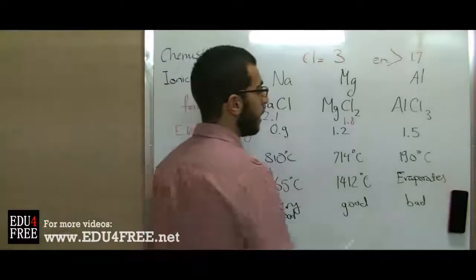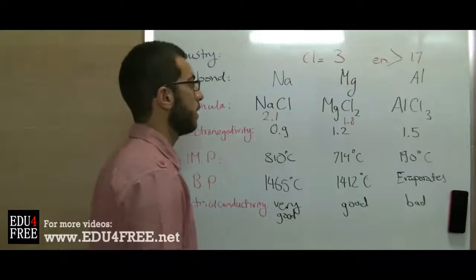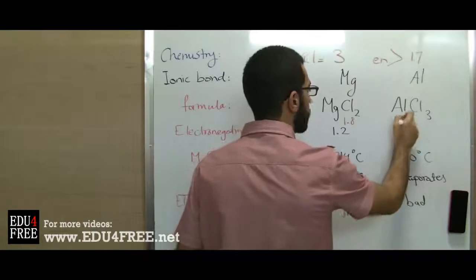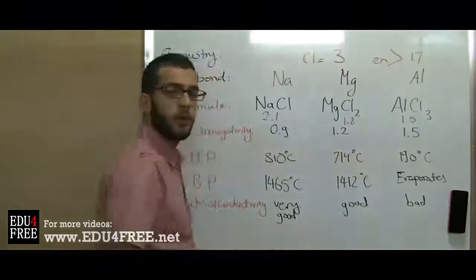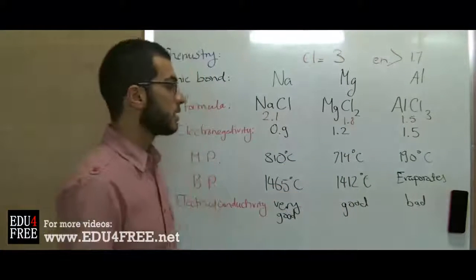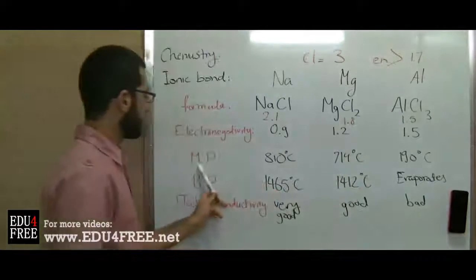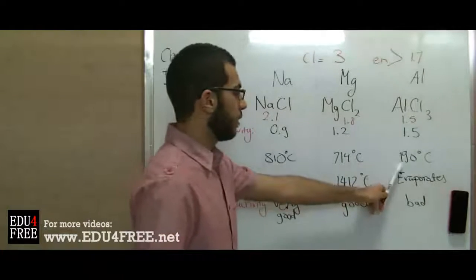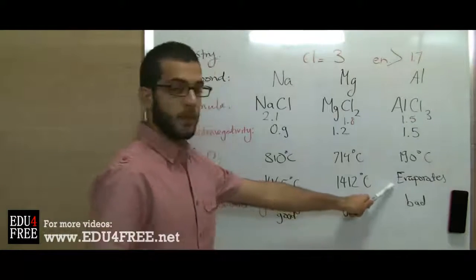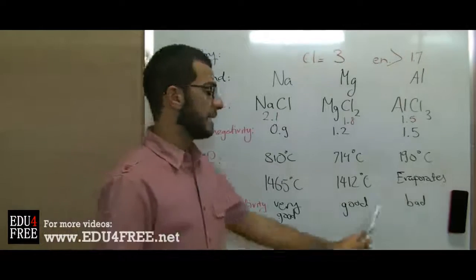For aluminum chloride, the electronegativity of aluminum is 1.5. The electronegativity difference of the compound is 3.0 minus 1.5, which gives 1.5 — less than 1.7. So this compound is not ionic; it's covalent. We can see this from its very low melting point compared to magnesium chloride and sodium chloride. When heated, it evaporates at once, and its electrical conductivity is poor.